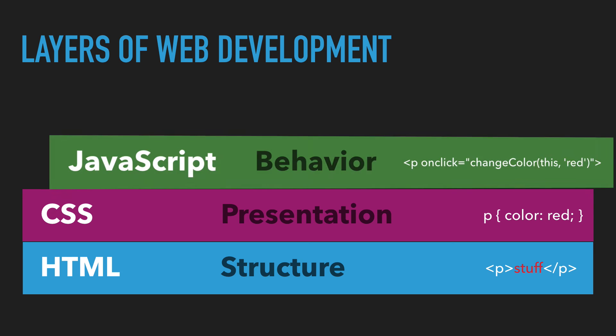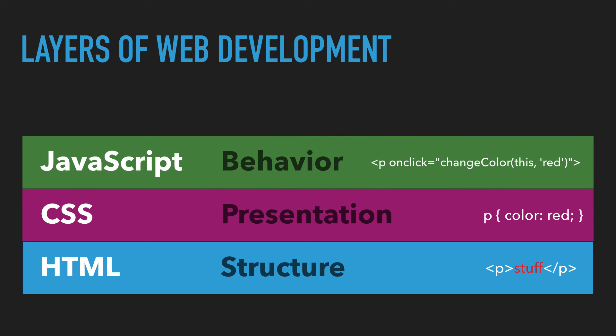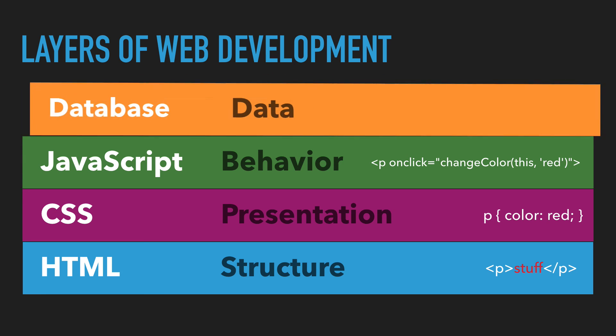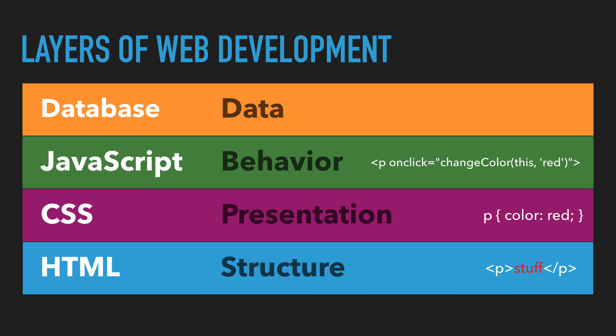The third layer is the behavior layer. This is where JavaScript comes in. You can see an example of code on the right — an onclick event. When you click this paragraph, now with JavaScript, we can change the color of the text to red. Another layer that could be present on a web page is the data layer. This is where databases come in. The SQL programming language that we saw earlier is related to databases and data. But again, this is an optional layer, as is JavaScript and CSS.